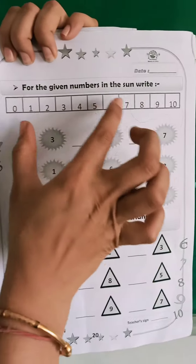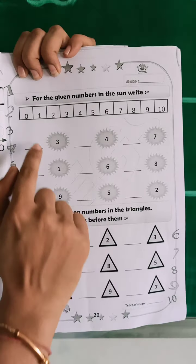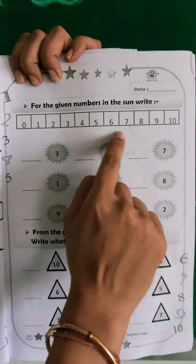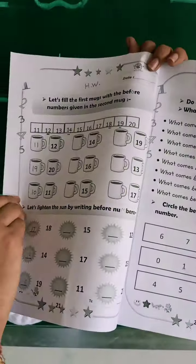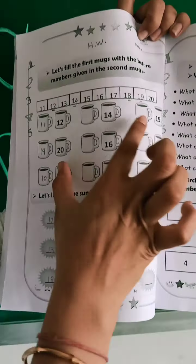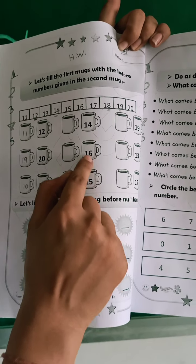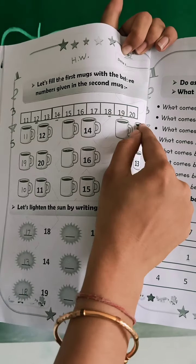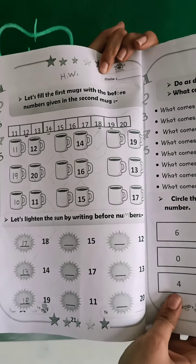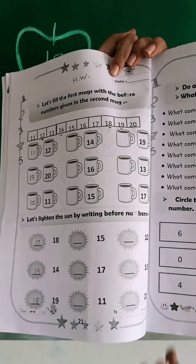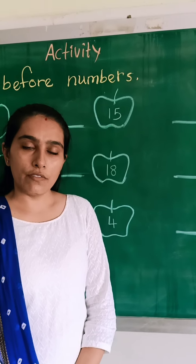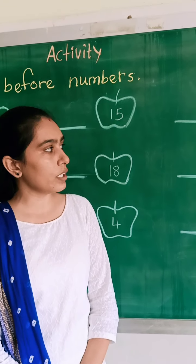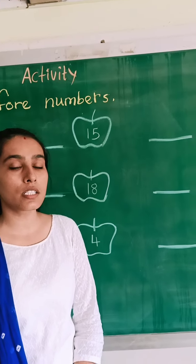Because these all numbers are included — 1 to 10 numbers. So we learnt on the number line, to find before numbers easily. Our HW included 11 to 20 numbers. We learnt 11 to 20 on the number line to find before numbers easily. But today we have learnt before numbers without the number line.